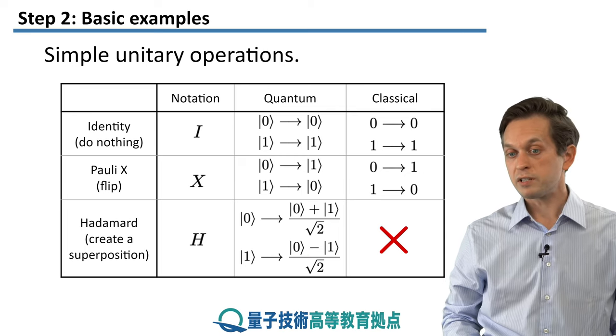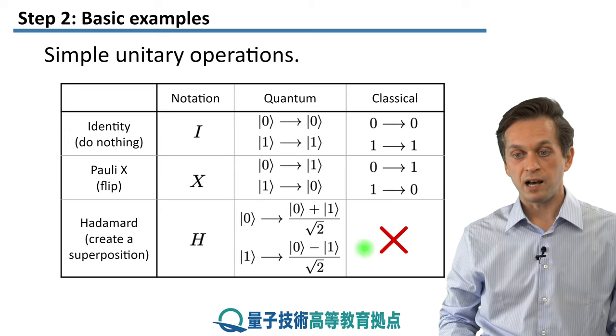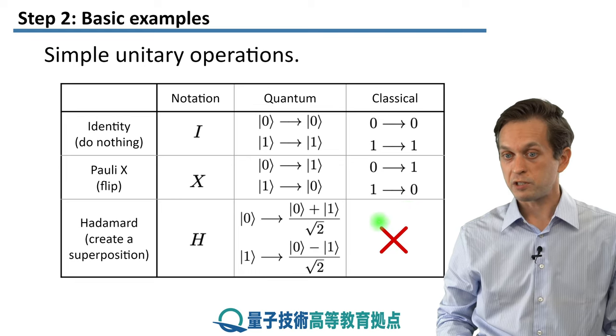And now you see, this is the first example of a quantum operation that doesn't really have a classical analog. As we said, we cannot have superpositions of classical bits.